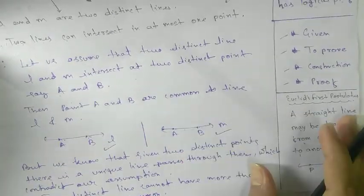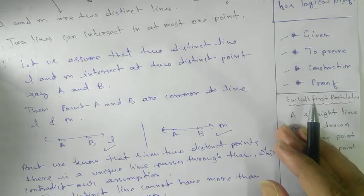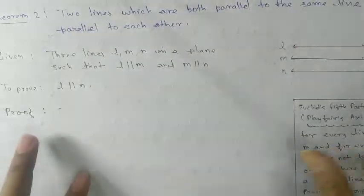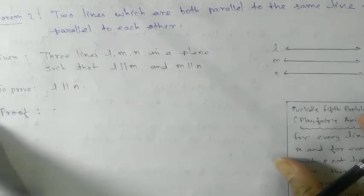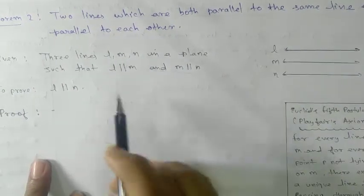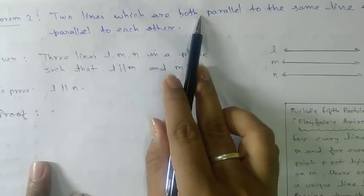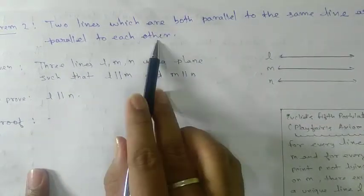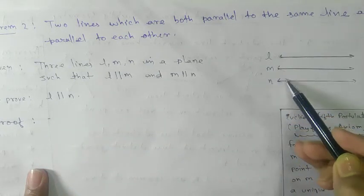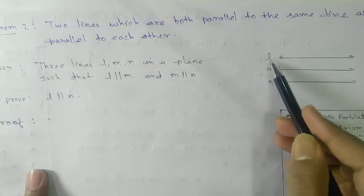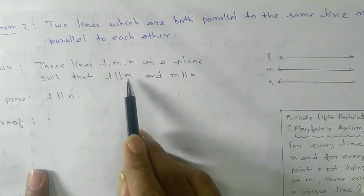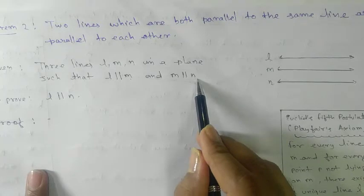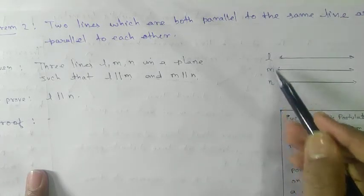This completes the first theorem — try to listen to it again if you did not follow. Now the next and last theorem for this chapter: two lines which are both parallel to the same line are parallel to each other.